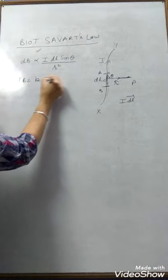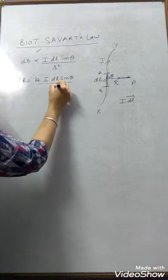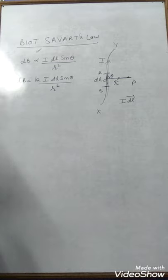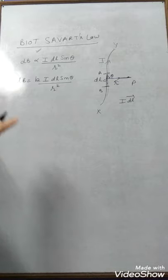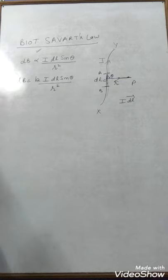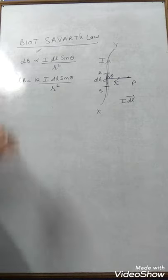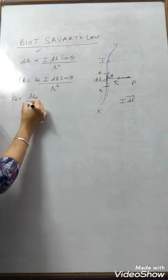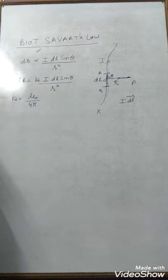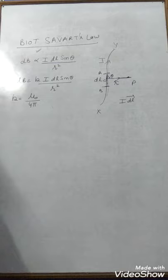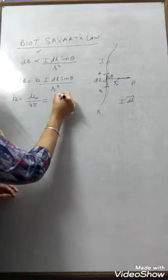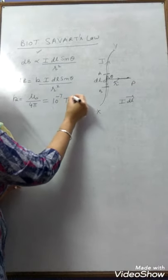When the proportionality is removed with a constant K, its value depends upon the nature of the medium and the system of units. In the SI system with vacuum as the medium, the value of K is μ₀ / 4π. The term μ₀ is called the absolute permeability of vacuum or free space, and its value is 10⁻⁷ Tesla per ampere-meter. Tesla is the SI unit of magnetic field B, defined from the magnetic Lorentz force: B = F / (QV). When force is in Newtons, Q in Coulombs, and velocity in meters per second, the magnetic field is said to be 1 Tesla.